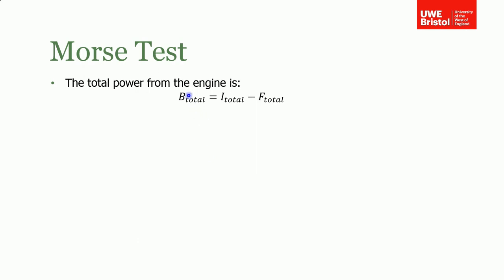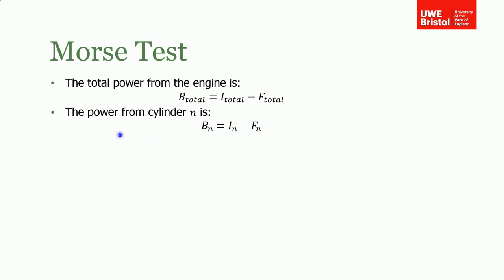So we're working on this assumption. We're saying that the total brake power from the engine is equal to the indicated power minus any frictional losses. If that's for the total engine, then for each individual cylinder the brake power is the indicator power for that cylinder minus the friction for that cylinder. Therefore, for a four cylinder engine, where n is from one to four, we can rewrite this as the indicated power of all our four cylinders minus the frictional losses from all of our four cylinders.